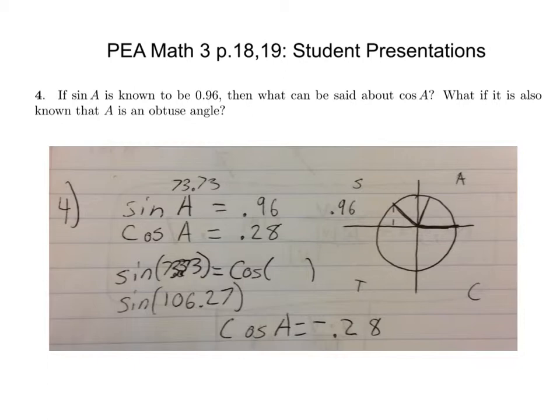If sine A is known to be 0.96, then what about cosine A? What if it is also known that A is an obtuse angle? So we found that sine A equals 0.96, and then we found the angle for A to be 73.73. That's right there in that triangle, and that's in quadrant one. Then cosine A equals 0.28.